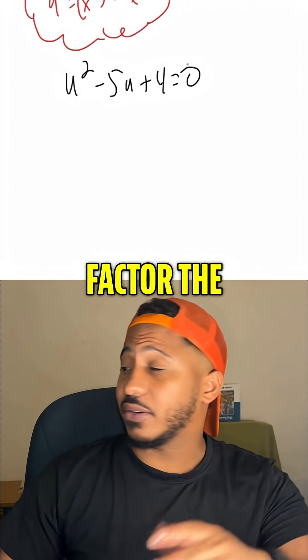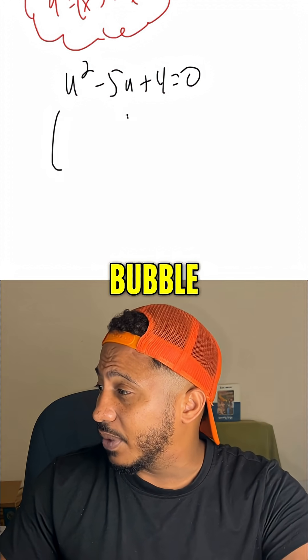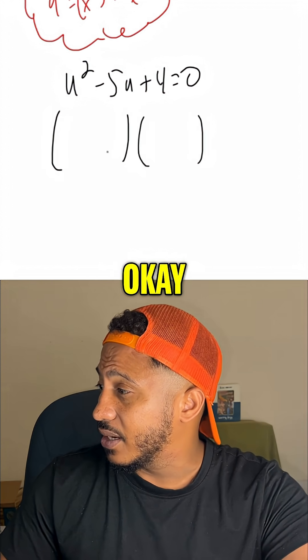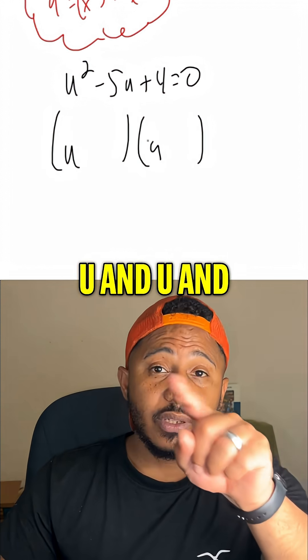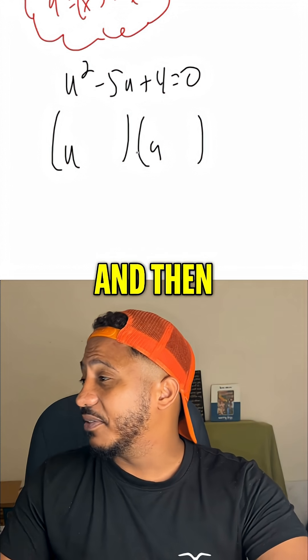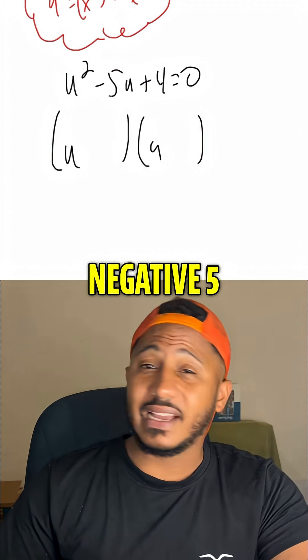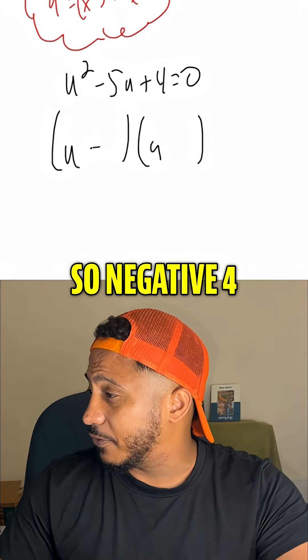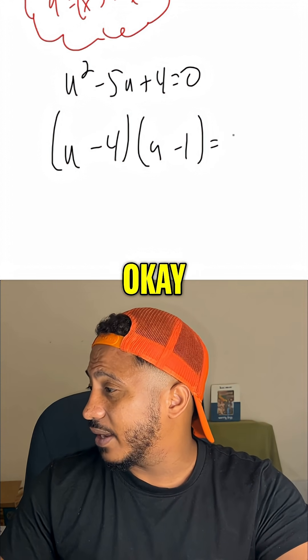So we already got 0 on one side. Factor the other side. Here we can go double bubble — u and u — and then numbers that are also probably going to combine to give negative 5. So negative 4 and negative 1.